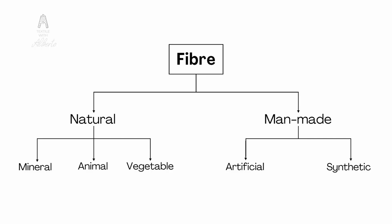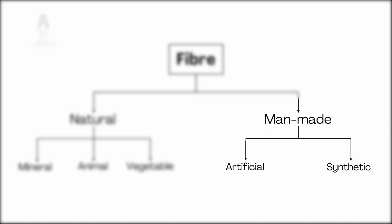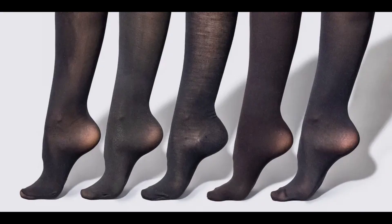Normally tex and dtex are used for synthetic and artificial fibers. For example, dtex is very commonly used for viscose, and tex is used for polyester, polyamide, and so on. Denier is very commonly used for tights and hosiery in general.